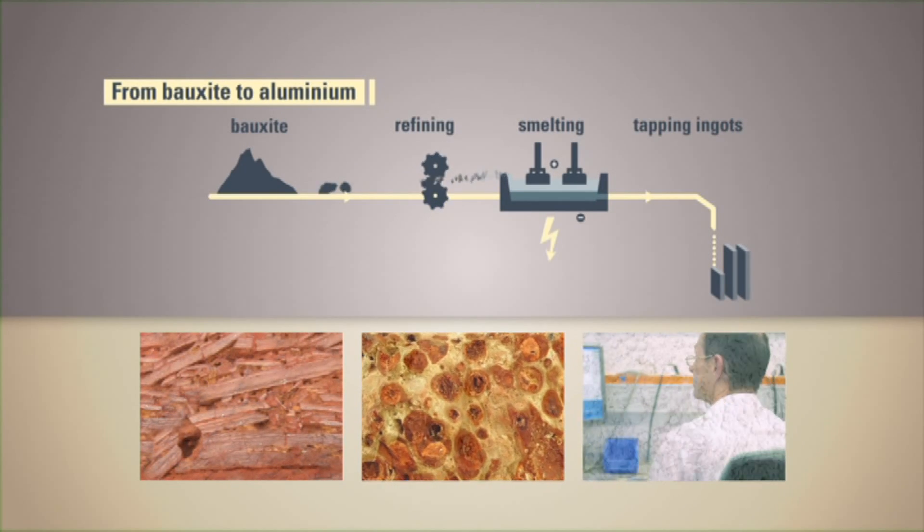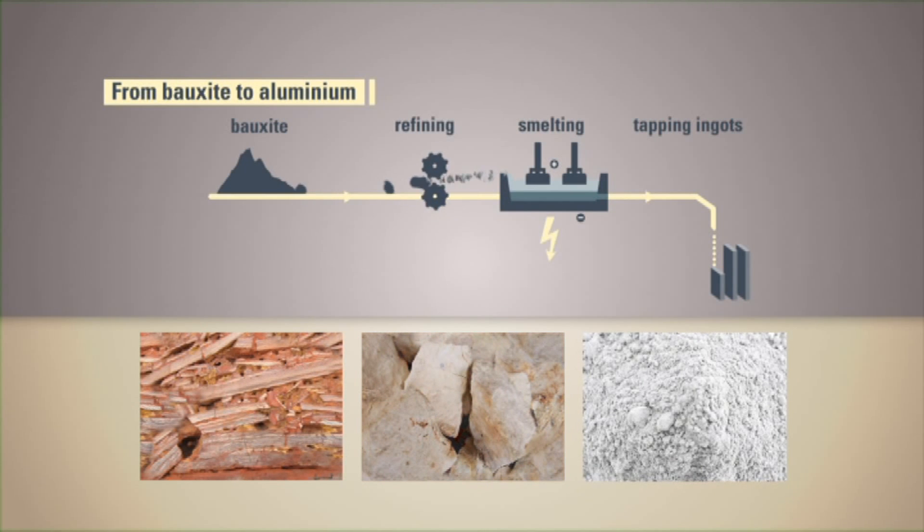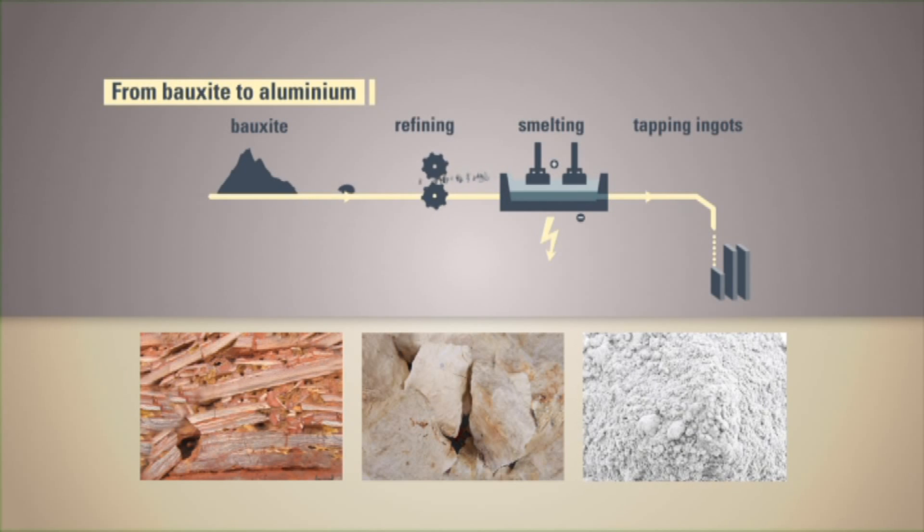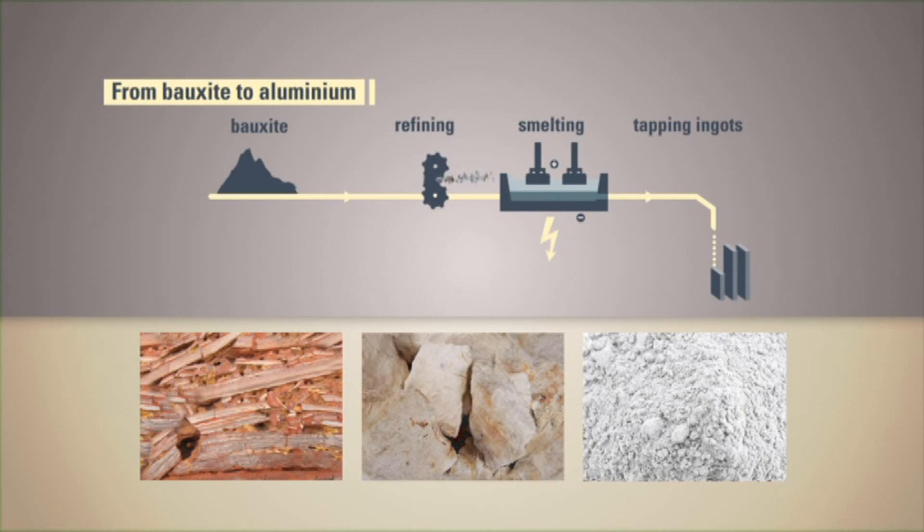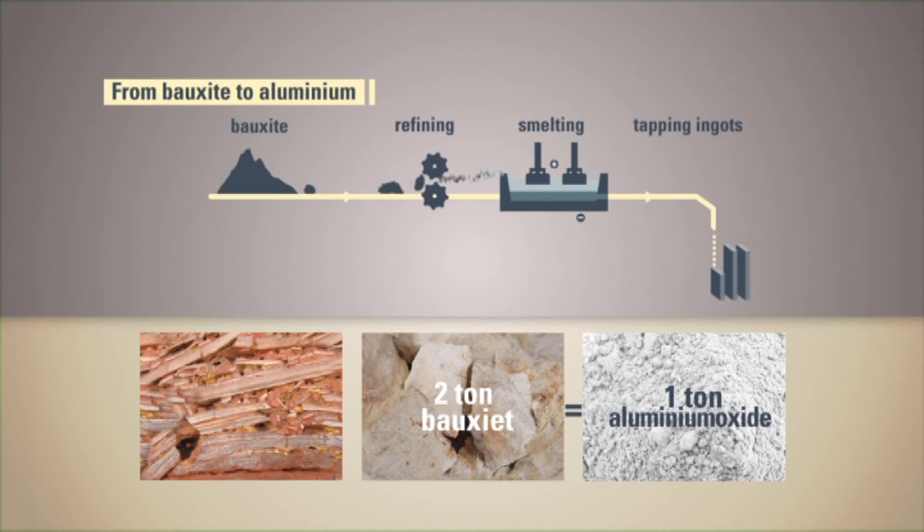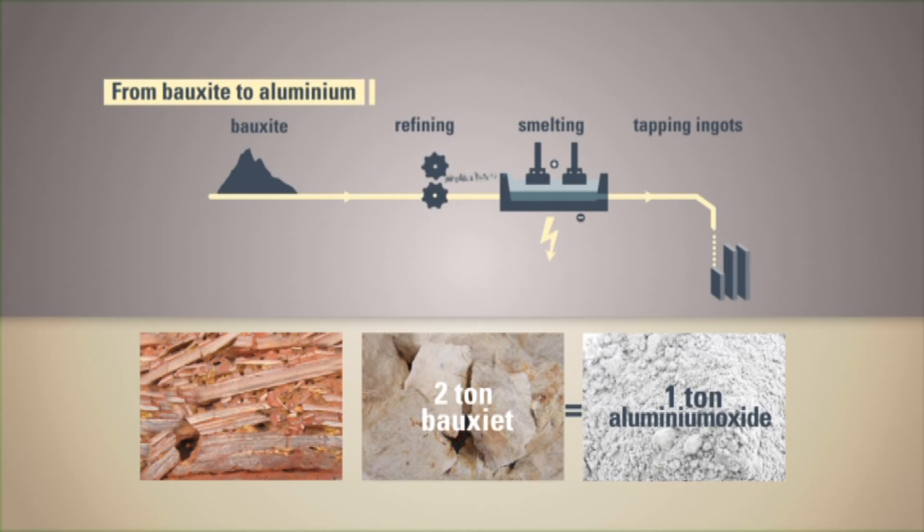During the refining process any impurities are dissolved from the raw bauxite. Then everything is washed and filtered after which we end up with a white powder called alumina oxide. Typically you need two tons of bauxite to produce one ton of alumina.